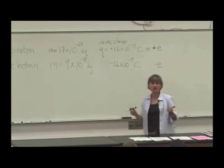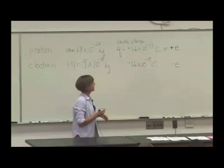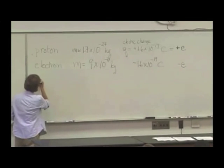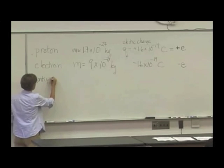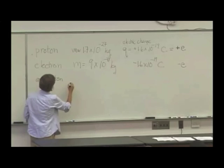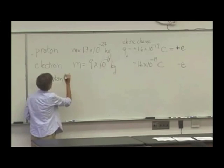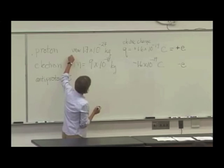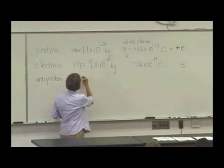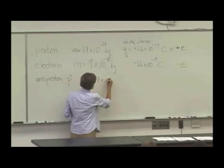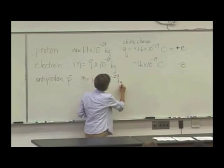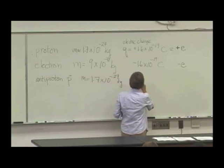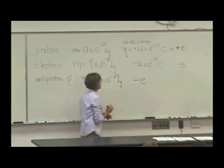And there's a bunch of other charged particles that you might know about that we may encounter. There's an antiproton. We sometimes write it as a P minus. It has the same mass as the proton, but it has a negative charge, a charge of minus E.